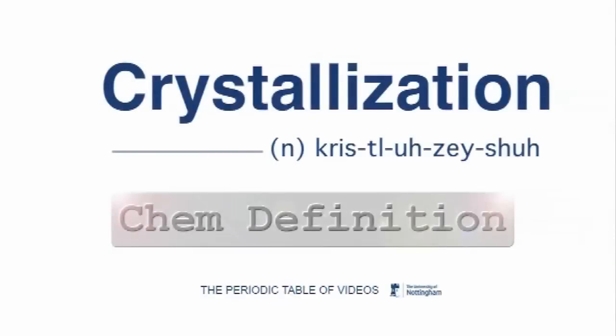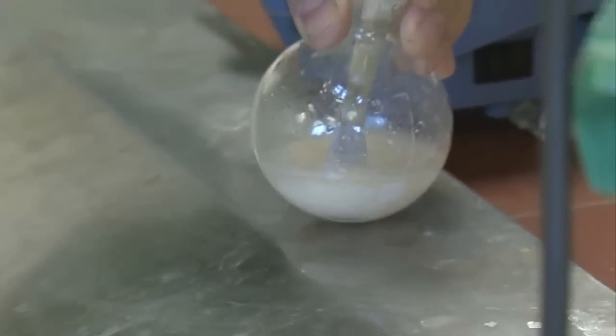This word is crystallization, or perhaps also re-crystallization, because chemists always want to get the chemicals they make as pure as possible. And a good way of purifying chemicals is to make crystals of them. When they're in solution, you can have all sorts of impurities, but when they form crystals, the crystals contain a much purer compound than in the solution, and the impurities are left in the solution.